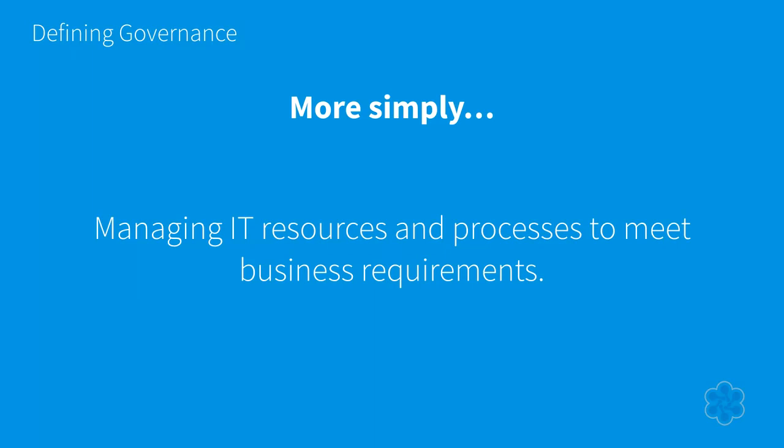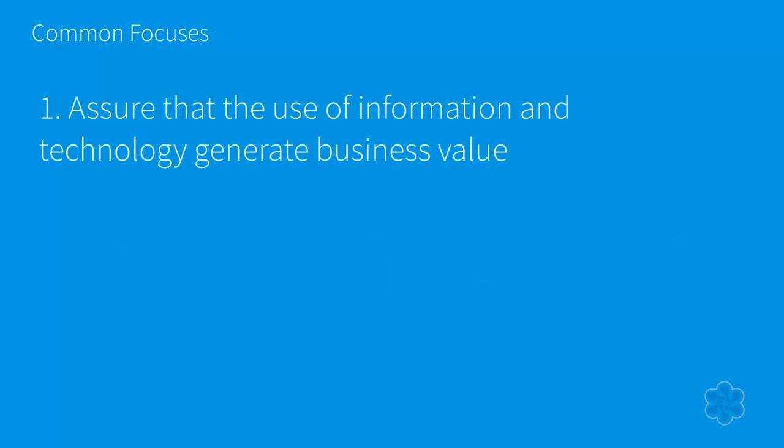Governance at a very high level is just making sure that IT — the processes and resources — are meeting business requirements. We're not just talking about individual software systems, but also the business processes associated with managing IT. This breaks down into a number of different things when we look at larger businesses or companies with more stringent software requirements.